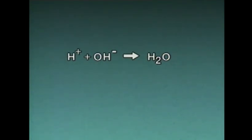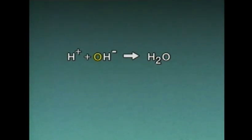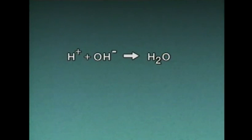This equation represents a reaction in which hydrogen ions and hydroxyl ions react together to form water. The equation shows one oxygen and two hydrogens to the left of the yield sign and one oxygen and two hydrogens to the right. Since both sides have the same numbers of the same types of atoms, we know the equation is balanced.